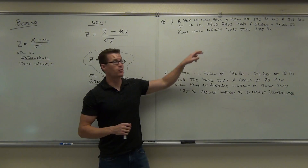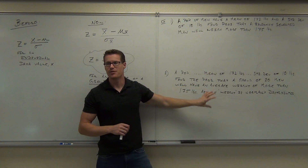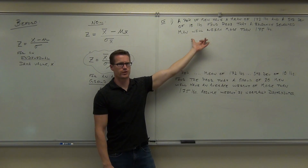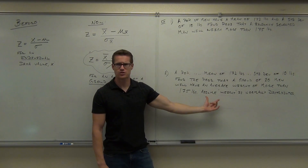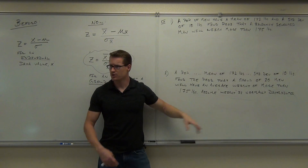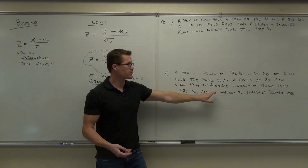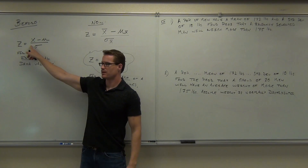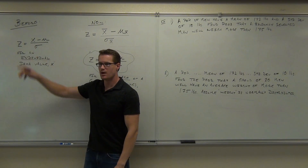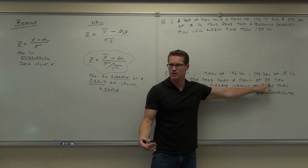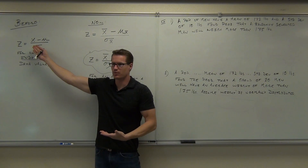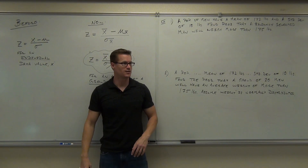What's the difference between these two problems? Is Example 1 talking about an individual or a group? An individual. Is Example 2 talking about an individual or a group? A group. Is this a single data value or an average? Notice even the wording gives it to you. If you try to plug Example 2 into the individual formula, there's no average to plug in for your sample, and there's no N. You have an N of 20 in Example 2 — where would you put that in the individual formula? It wouldn't fit.